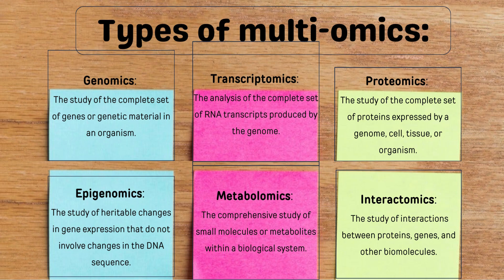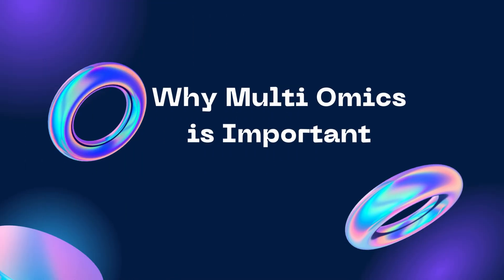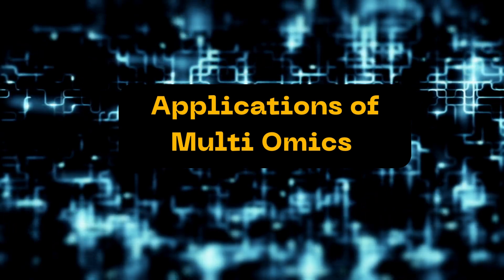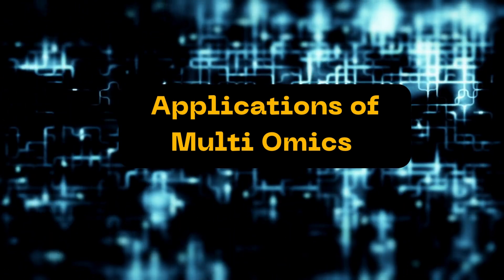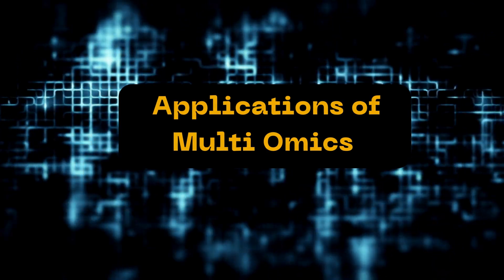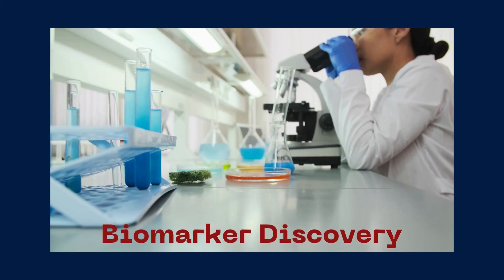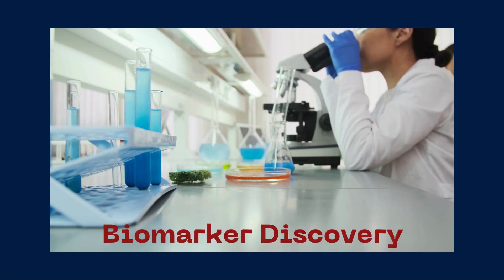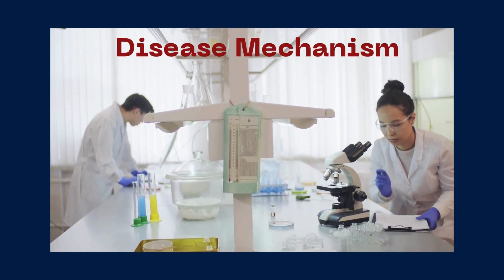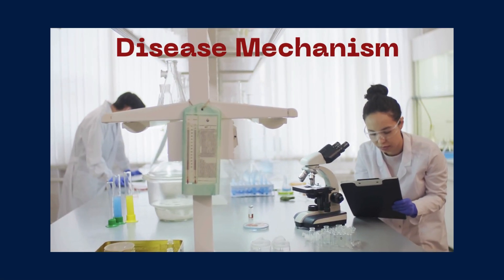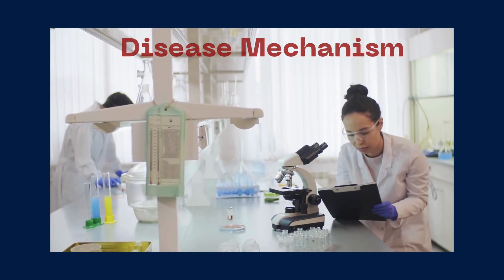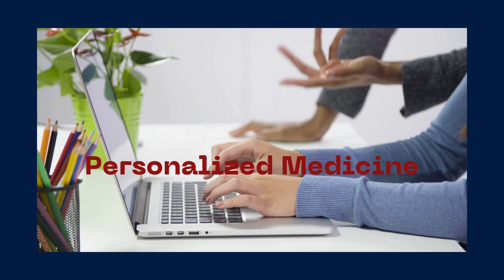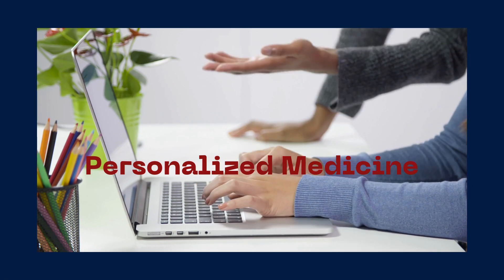Let's talk about why Multiomics actually matters and its real-world uses. First, we can use it to find new biomarkers for diseases, spotting disease way before it causes trouble. We can also use it to figure out what's really going on inside diseases like cancer and Alzheimer's, and by understanding these diseases better, we can come up with smarter ways to fight them. Multiomics can also help personalize medicine and speed up drug discovery — finding drug targets and predicting which drug will work best, saving time and money.